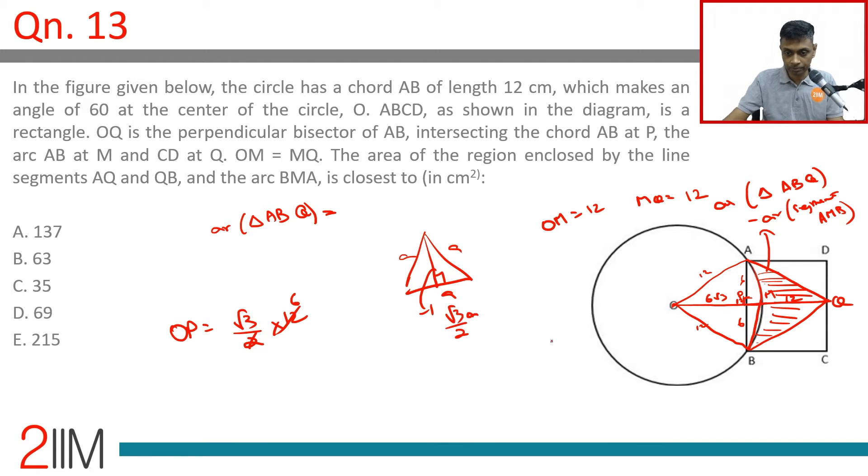So PM is 12 minus 6 root 3. Therefore we can find area of triangle ABQ, which is 12 plus 12 minus 6 root 3, which is 24 minus 6 root 3. So we know the height PQ, we know the base AB. Area of triangle ABQ can be found.